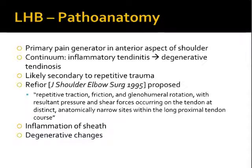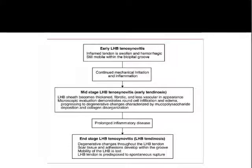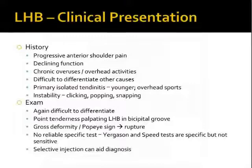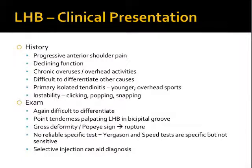This diagram highlights that progression — initially having a mobile, inflammatory tendon which then becomes thickened along with the sheath, and eventually becomes less mobile and degenerative. These patients tend to present with progressive anterior shoulder pain and declining function. They often have a history of chronic overuse of the shoulder or overhead activities, and as with any shoulder problem it can be difficult to differentiate from other causes.